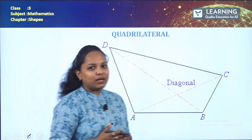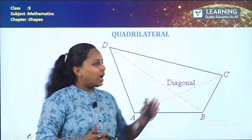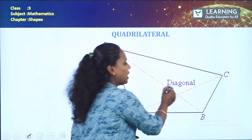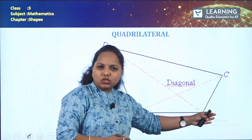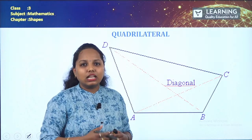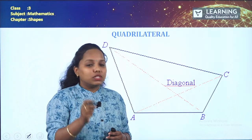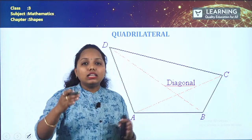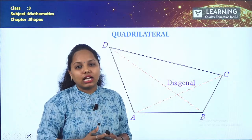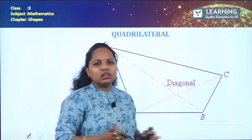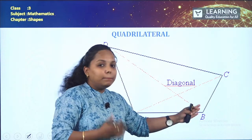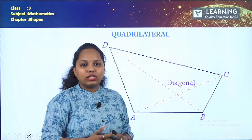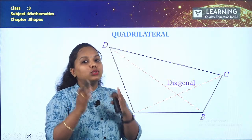How about this one? This is a quadrilateral. And what is this line called? This is called a diagonal. What is a diagonal? It is a line touching from one corner to another opposite corner. If it just touches from one side to the adjacent side, it is called a side. B's opposite corner is D, and A's opposite corner is C. A quadrilateral has two diagonals.